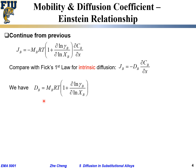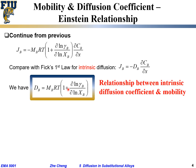This is a very important relationship because mobility can quite often be measured electronically. It's the same number whether driven by chemical potential or by an electrical field. For an ideal solution, the activity coefficient γ is always one, so activity equals molar fraction. For a very dilute solution, γ is constant — possibly not one, but constant.